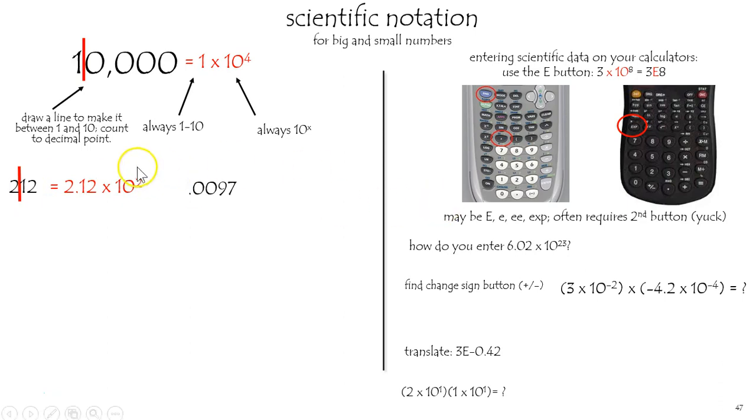If we're going below 1, we do the same thing, but just count the placeholders to the decimal place in the other direction and make it a negative number. This would be 9.7 is between 1 and 10. And we have 1, 2, 3 digits to the decimal place. Therefore, 9.7 times 10 to the minus 3.